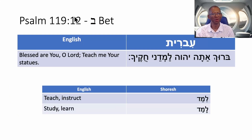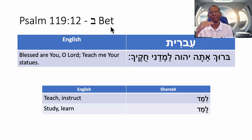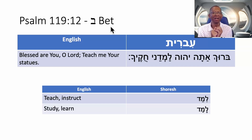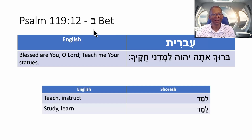We're going to start with Psalm 119:12 and bet. Remember, every eight verses is basically a consonant letter in the Hebrew alphabet. There are 22 consonant letters in the Hebrew alphabet. We've gone through Aleph, which was 119:1 through 8, and now we're on bet, which is 119:9 through 16. Right now we are on verse 12.